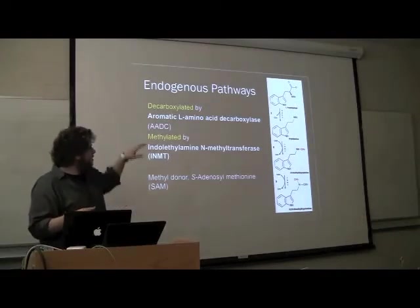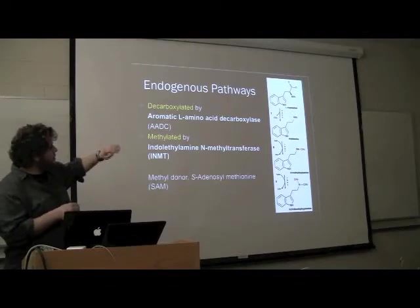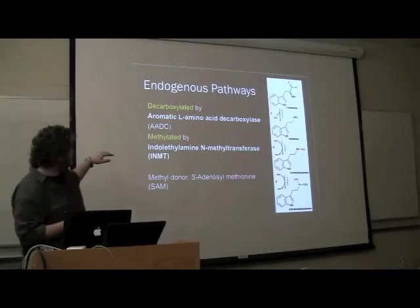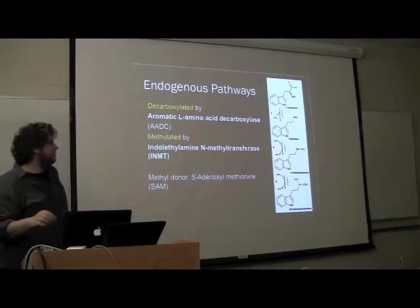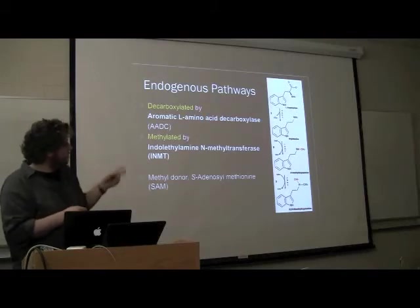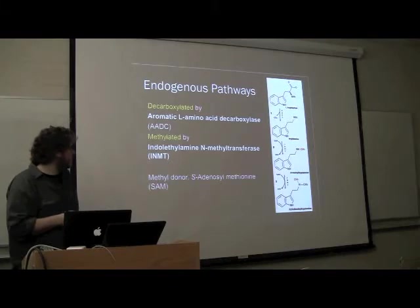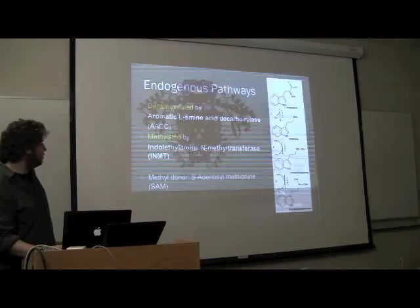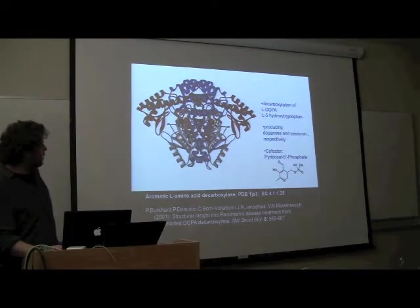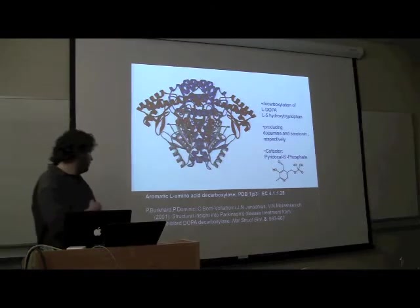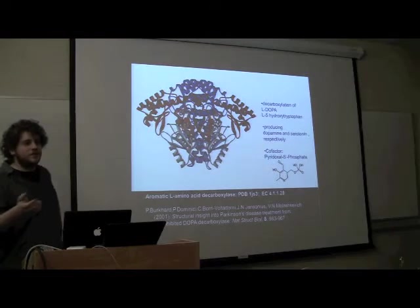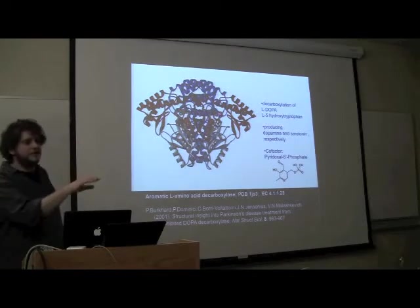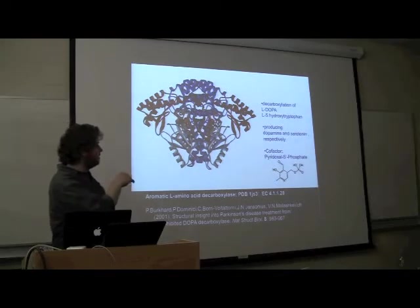Within the body, you start with tryptophan, and then you cleave off the carboxy group — basically carbon dioxide — using the enzyme aromatic L-amino acid decarboxylase. Then it goes through two methylations through indole ethylamine and methyltransferase, which uses a common methyl donor. This decarboxylase has actually been crystallized and goes by a couple of different names. It's used for a variety of different neurotransmitters, including decarboxylating DOPA into dopamine and 5-hydroxytryptophan.